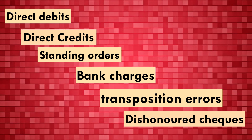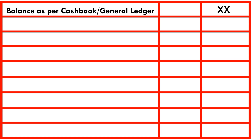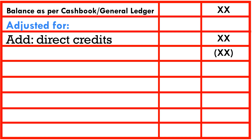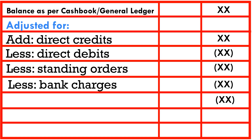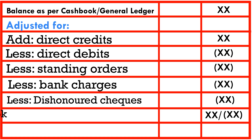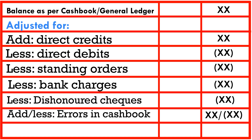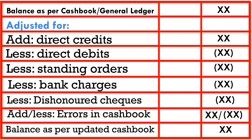If you put this in a format, it will look like this. Start with the balance per the cash book or general ledger before updating. Adjust for: add direct credits, less direct debits, less standing orders, less bank charges, less dishonored checks, and add or less errors in the cash book. The reason for 'add or less' is because it depends on the effect that the error has in the cash book. If the error has led to an overstatement of the balance, then that has to be deducted; but if it has led to an understatement, then it has to be added back. This will give us the balance per the updated cash book.